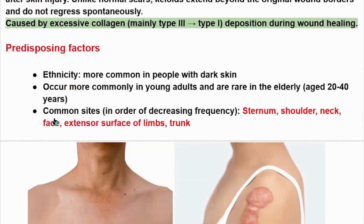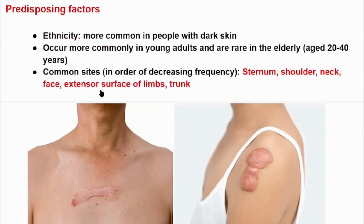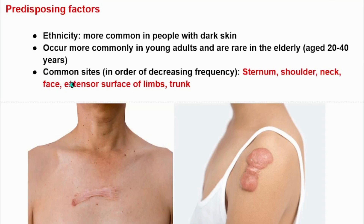Predisposing factors of keloid scar formation: ethnicity — more common in people with dark skin. Age — more commonly occurs in young adults and is rare in the elderly. It is common in young adults aged 20 to 40 years.